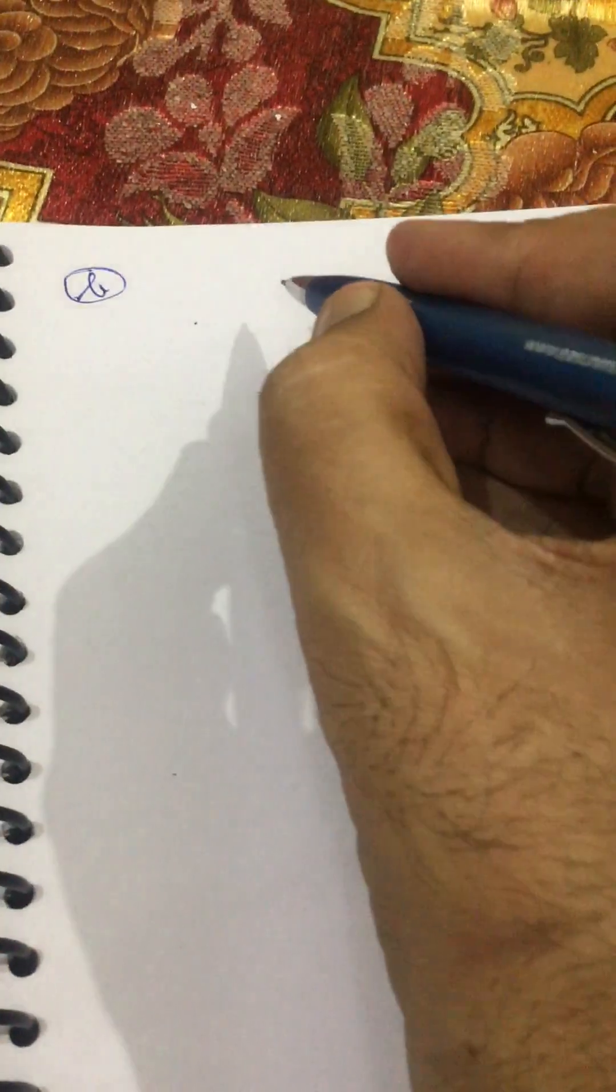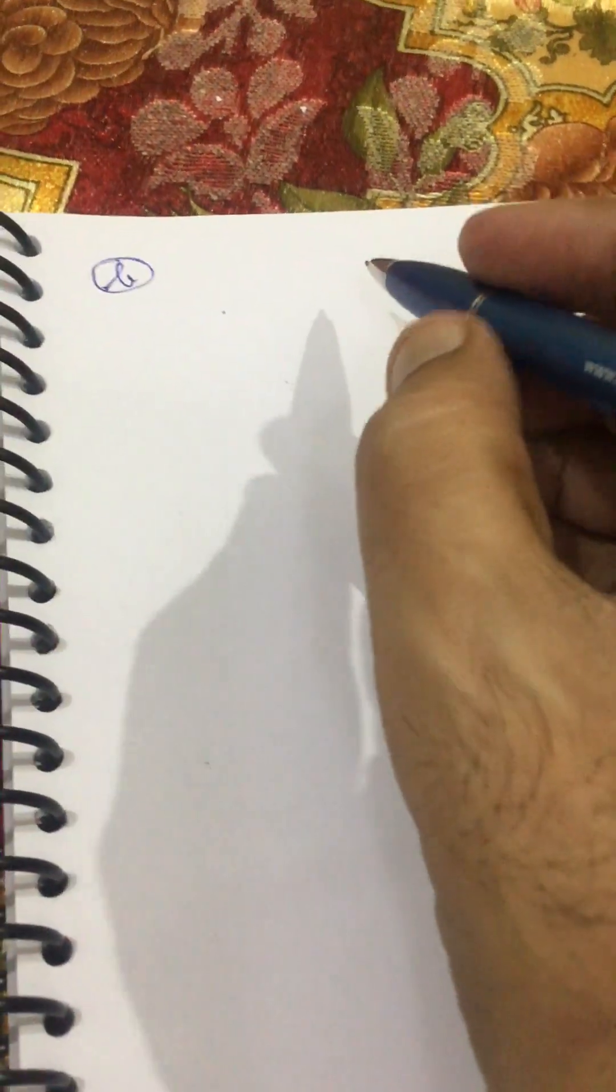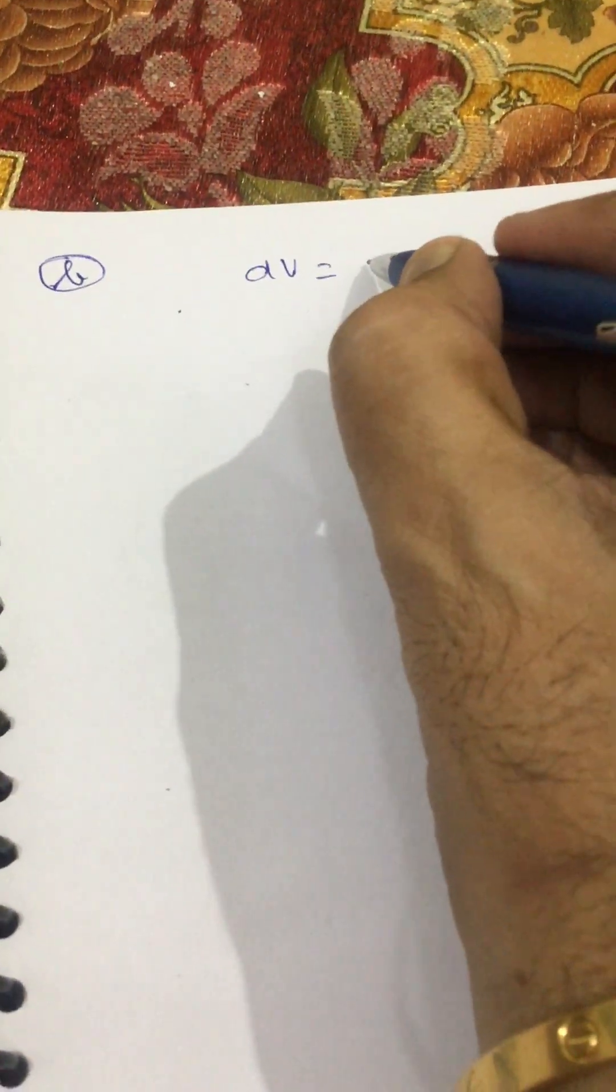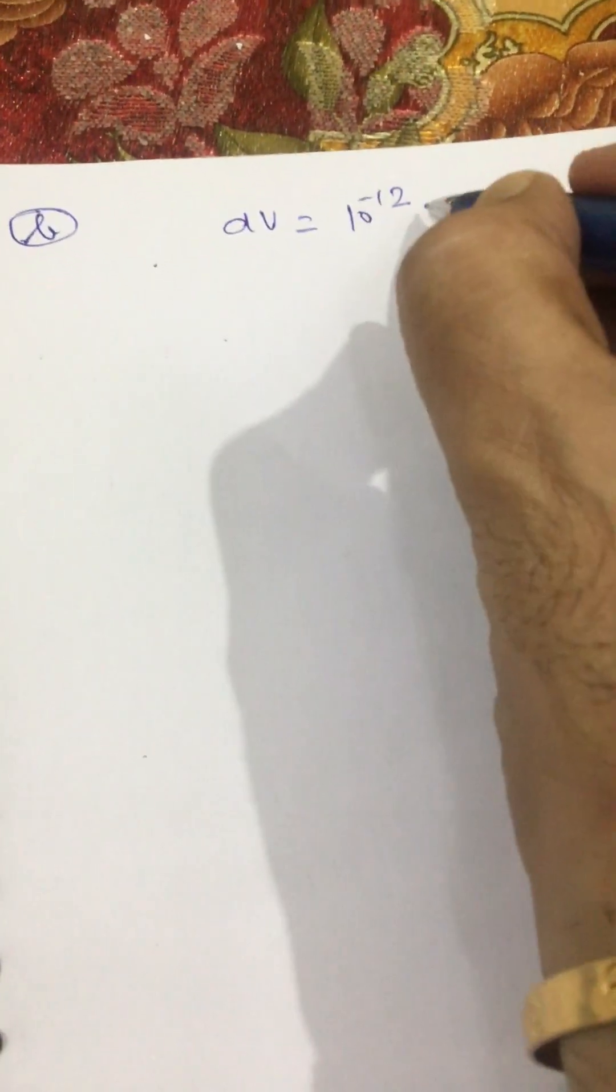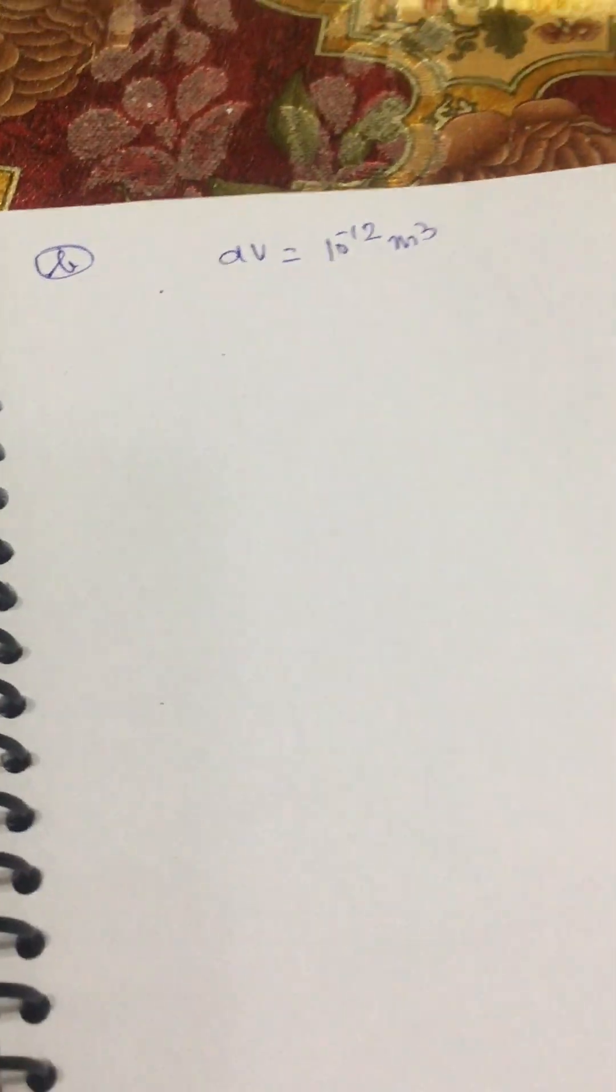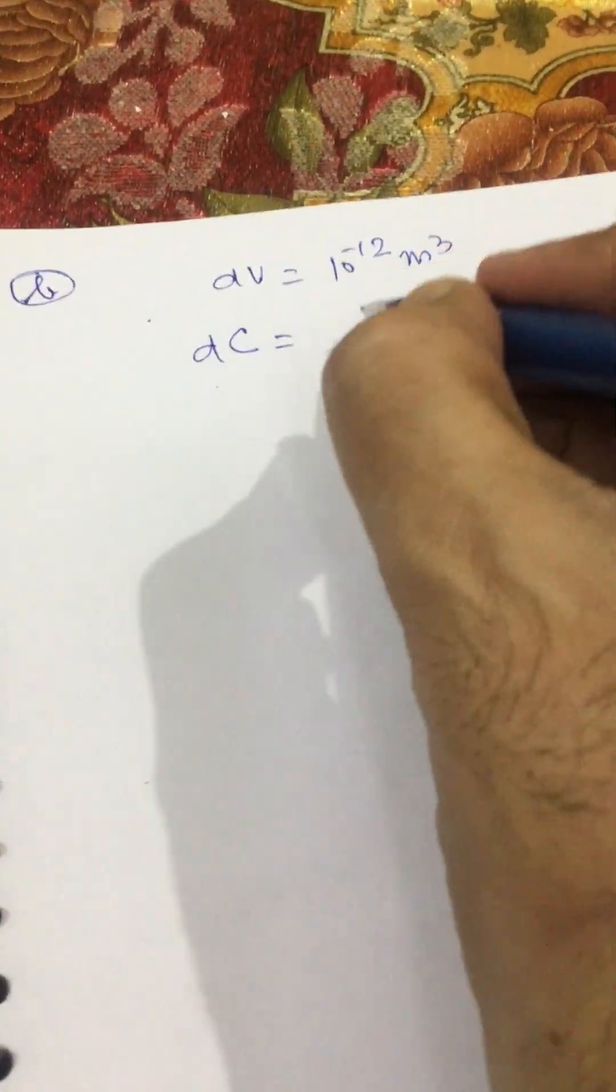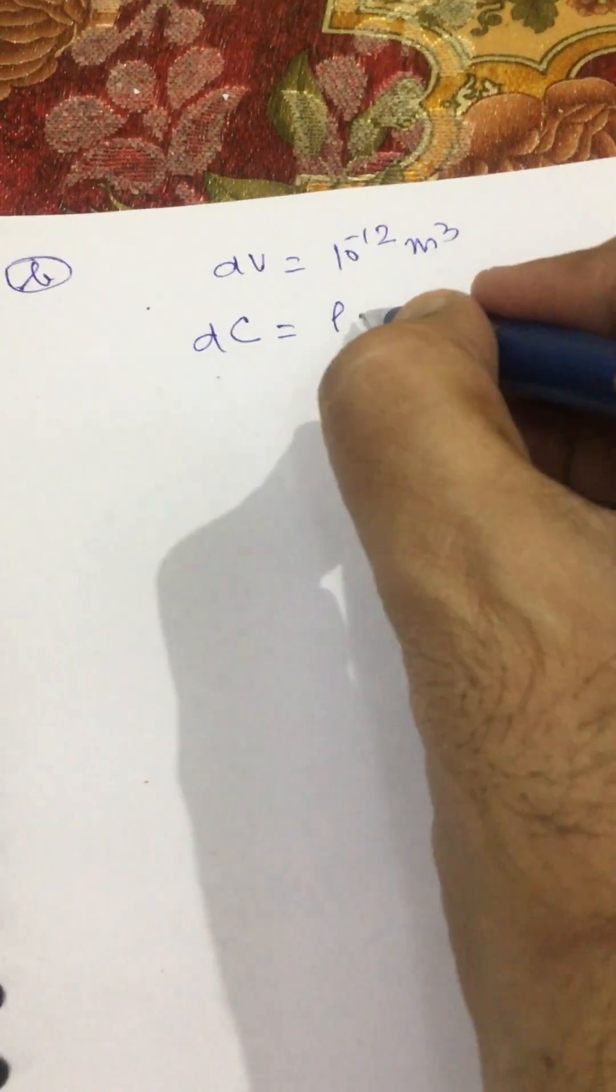Next part is that we have to find out net flux contained in a volume of 10 to the power minus 12 meter cube. So charge will be, dC will be rho into dV. dV we are knowing.